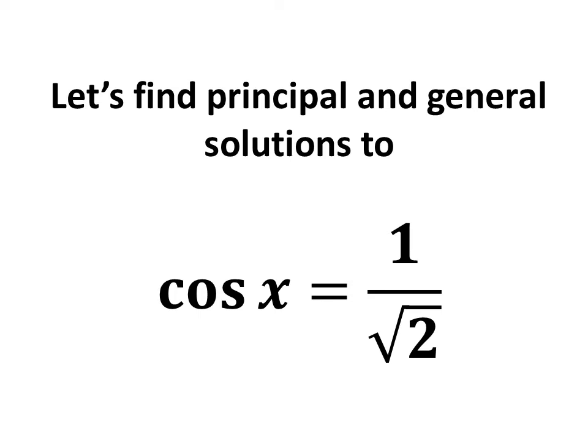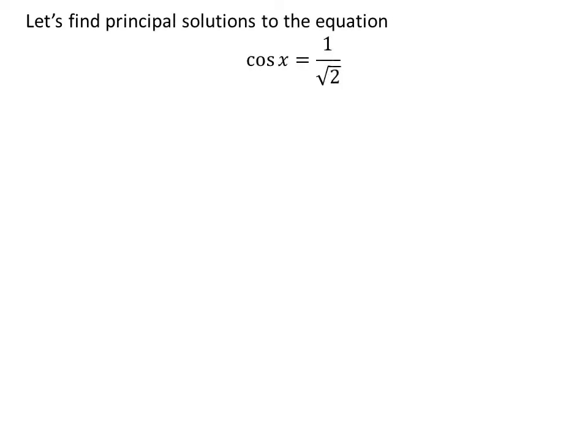In this video, we will learn to find the principal and general solutions to the equation cosine of x is equal to 1 upon square root of 2.